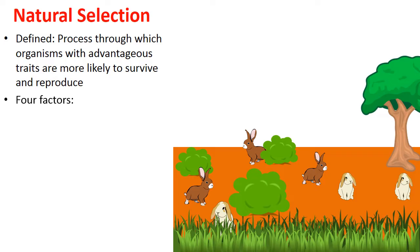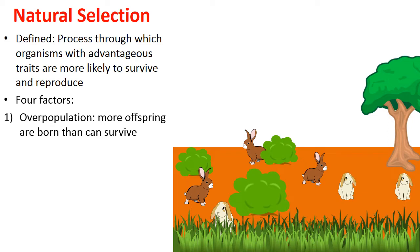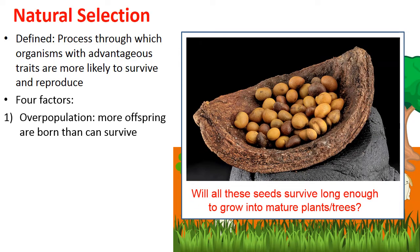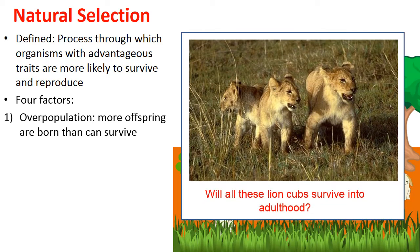There are four factors that influence natural selection. The first is that nature tends to overpopulate — more individuals are born than will survive. Not all fish eggs will reach adulthood; many will be food for other organisms. Not all seeds will grow into mature plants. Not all lion cubs will reach adulthood. There is a struggle to survive in nature.